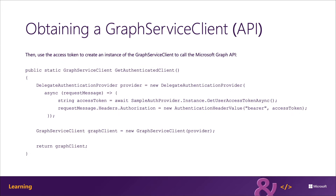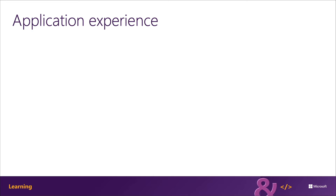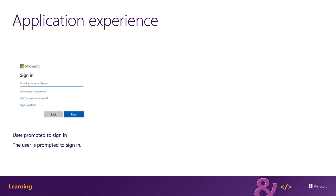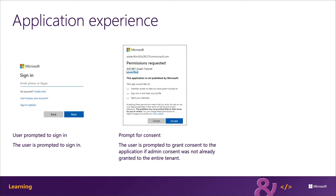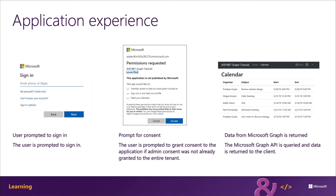Now the access token will be added to each request to Microsoft Graph. So what does the experience look like for end users? First, the user is prompted to sign in and redirected to Microsoft Identity's sign-in page. Once they sign in for the first time, they may not have yet granted the application permissions to Microsoft Graph, so the user is prompted to grant consent. Upon a successful sign-in, the user is redirected back to the ASP.NET MVC application, which shows calendar events obtained through the Microsoft Graph SDK.